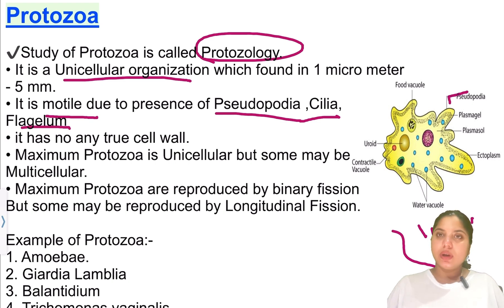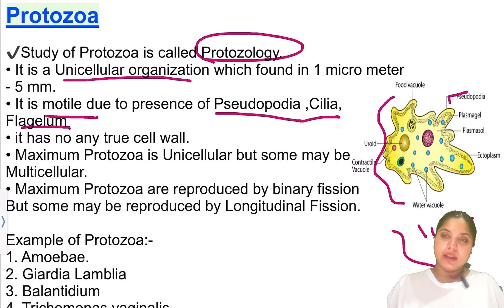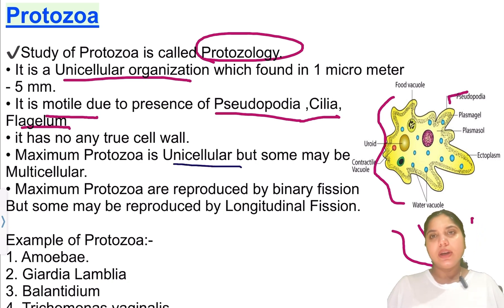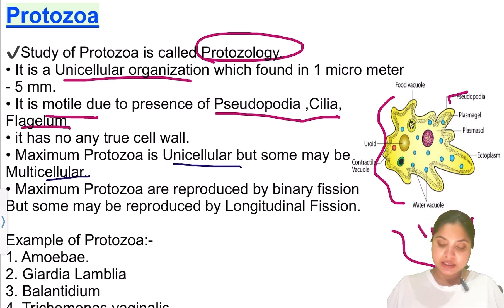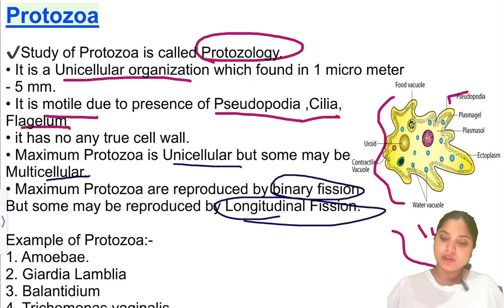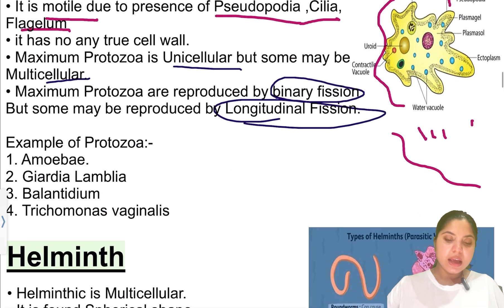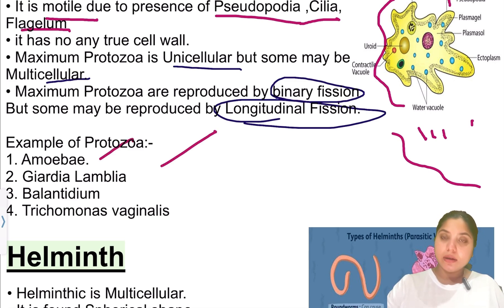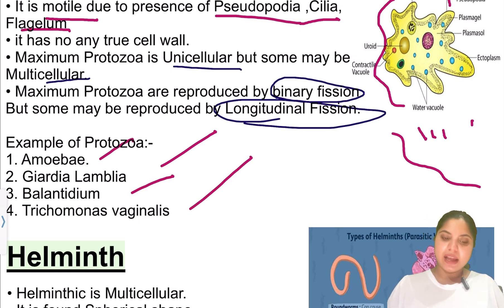Protozoa have no true cell wall. Maximum protozoa are unicellular, but some may be multicellular. Most protozoa reproduce by binary fission, but some reproduce by longitudinal fission — dividing into two equal halves. Examples of protozoa include Amoeba, Giardia lamblia, Balantidium, and Trichomonas vaginalis.